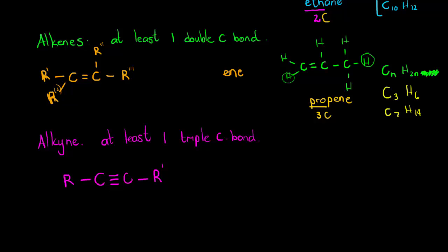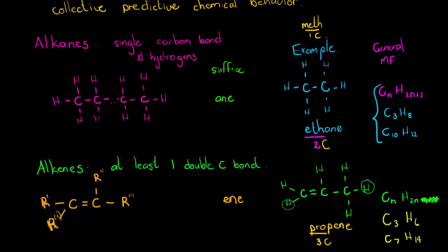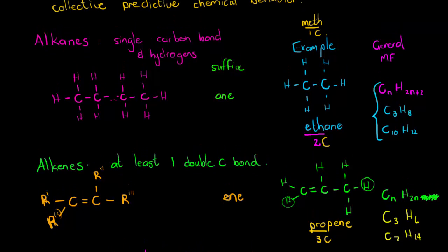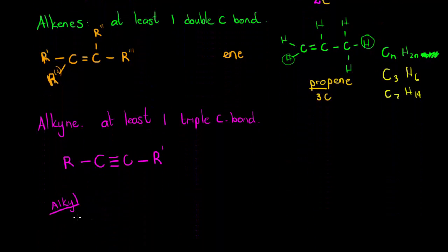An alkyl is a branch that looks like an alkane — but more about that later. Alkynes use the suffix "-yne", which is why they are called alkynes.